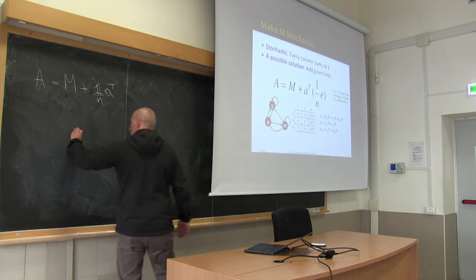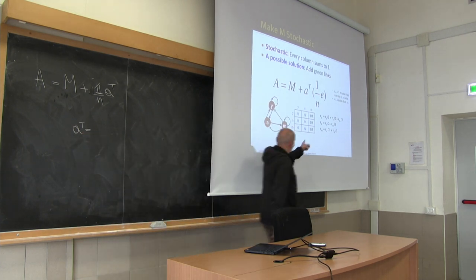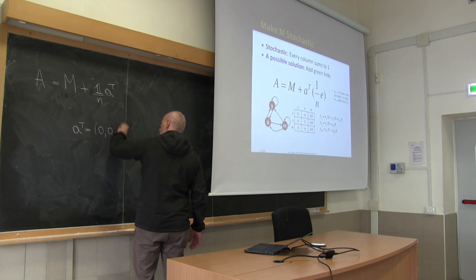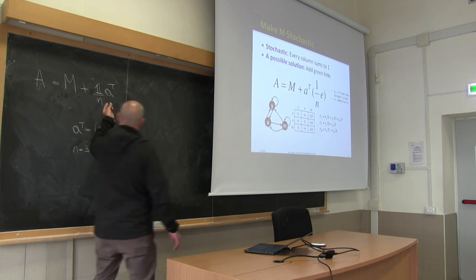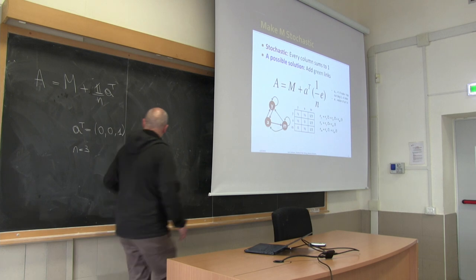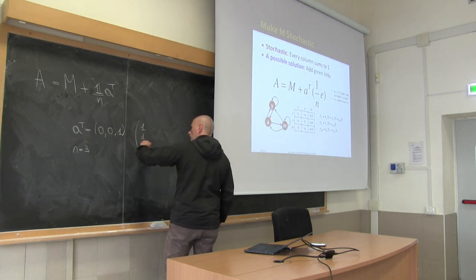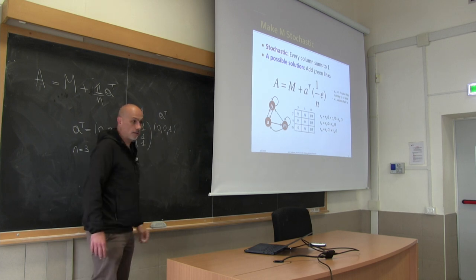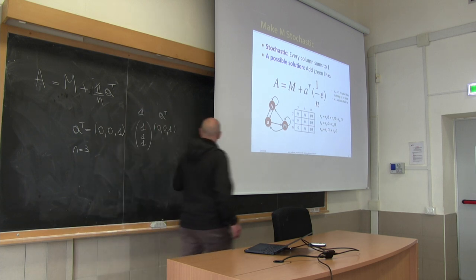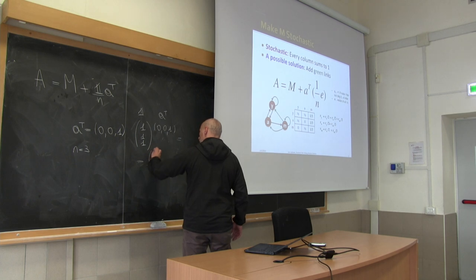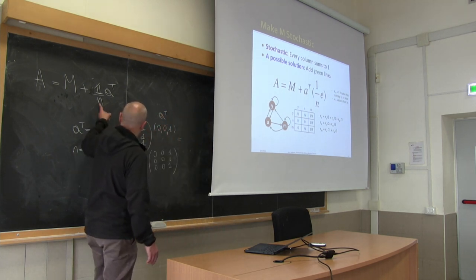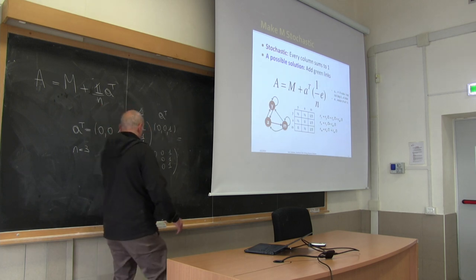For n equal to 3, the vector a indicates dead-end columns. Convince yourselves that when you take the outer product of the ones vector and a, you obtain a matrix that is exactly what we want. Then multiply by 1/n — in our case 1/3. Remember, you can multiply two vectors to obtain a matrix.